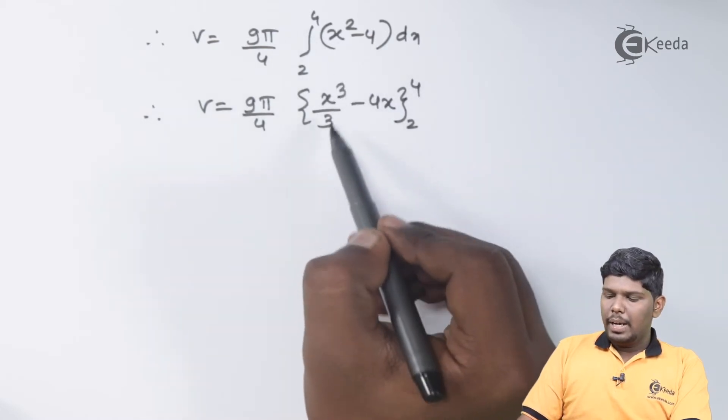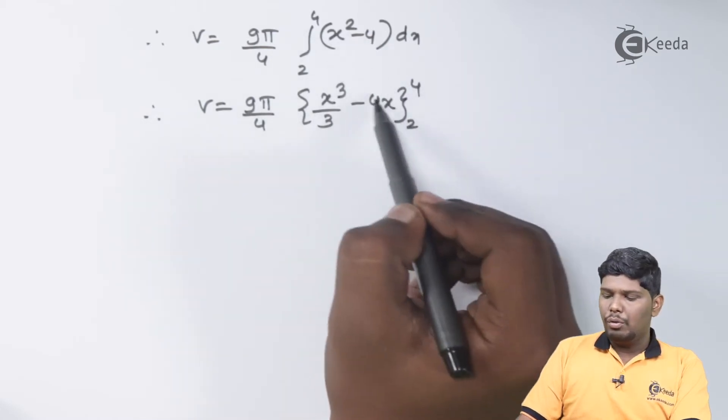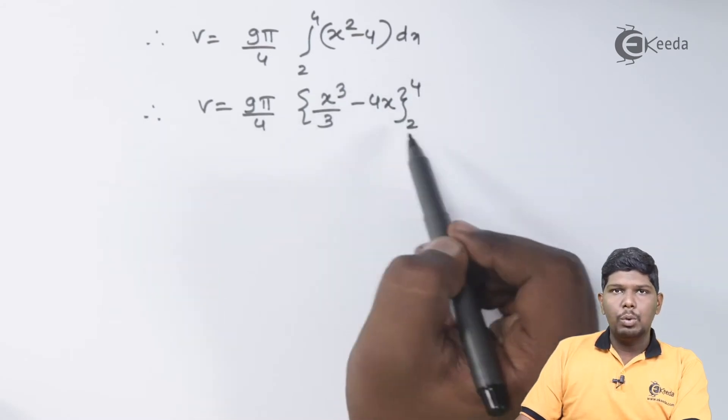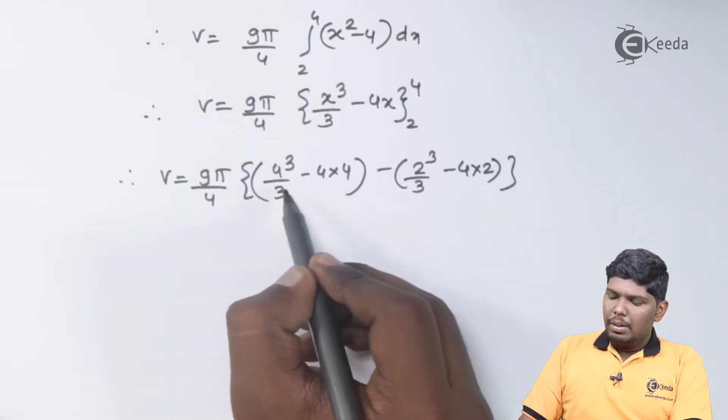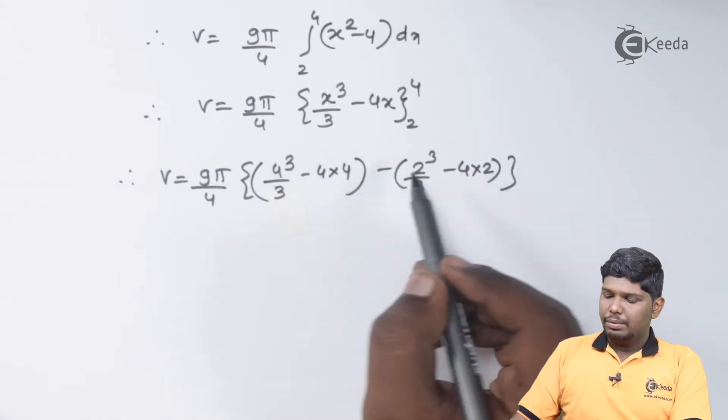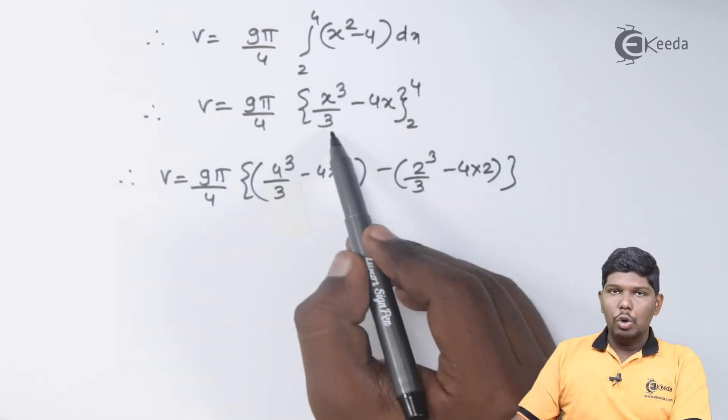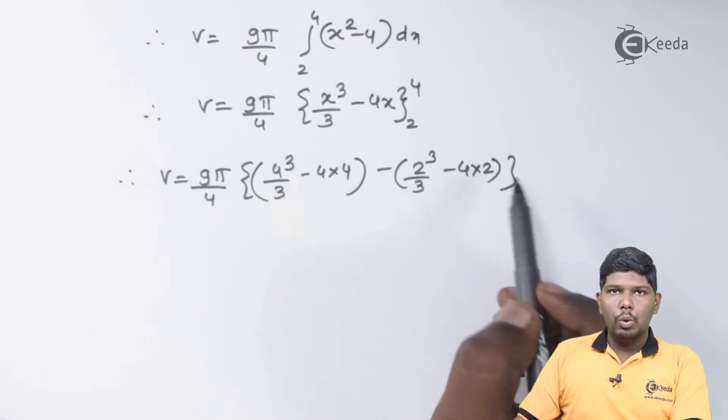Integration of x² will be x³/3 and integration of 4 will be 4x. Now let us substitute the upper and lower limits. This will give you 4³/3 - 4×4 minus we have 2³/3 - 4×2.